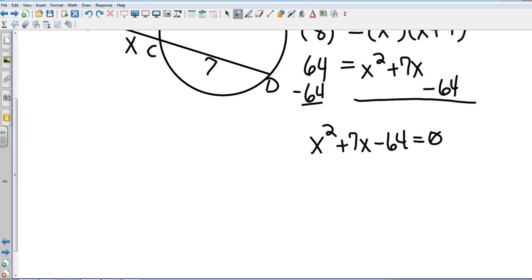So I need to think of factors of 64 that are going to multiply to get negative 64 and add to get 7. In this case, I'm not going to be able to factor it like we did the other one. So if I have a trinomial that can't be factored, there's only one way that I can find its solutions, and that is by using the quadratic formula.